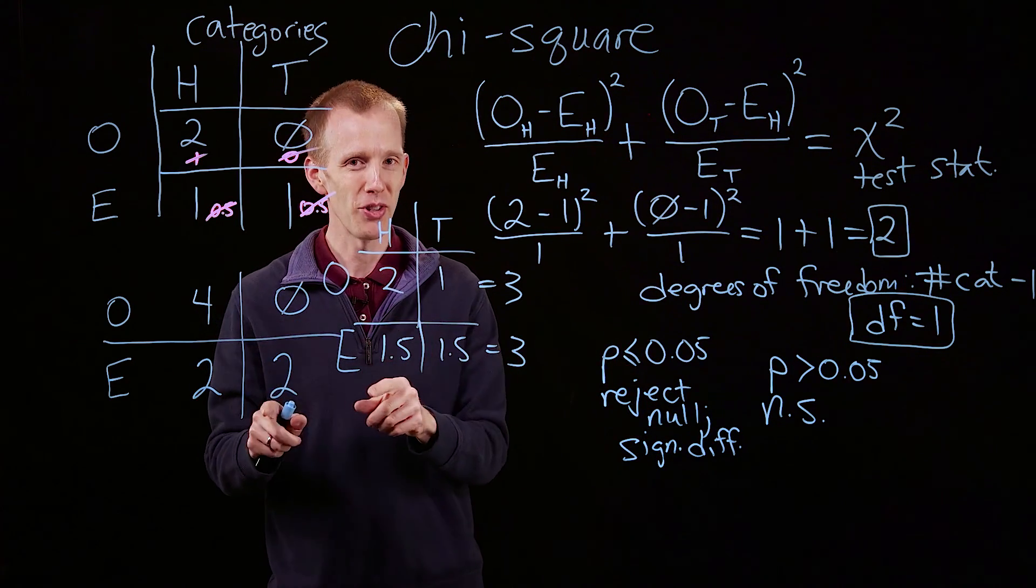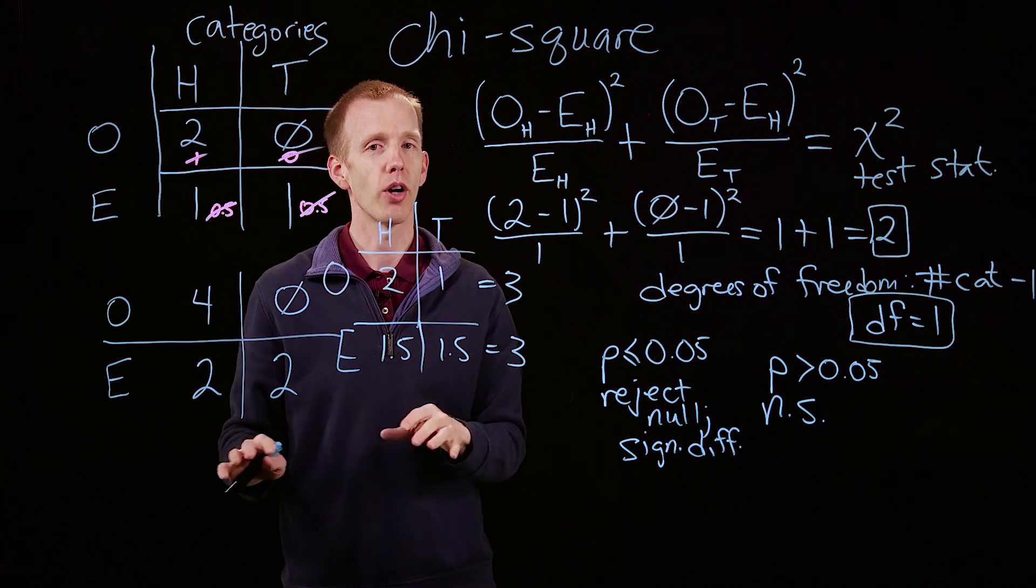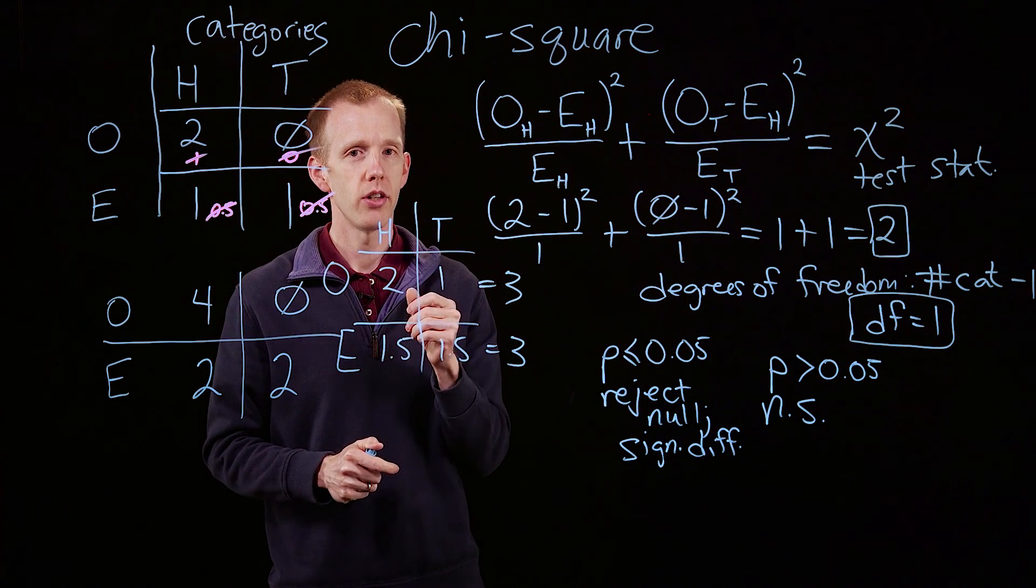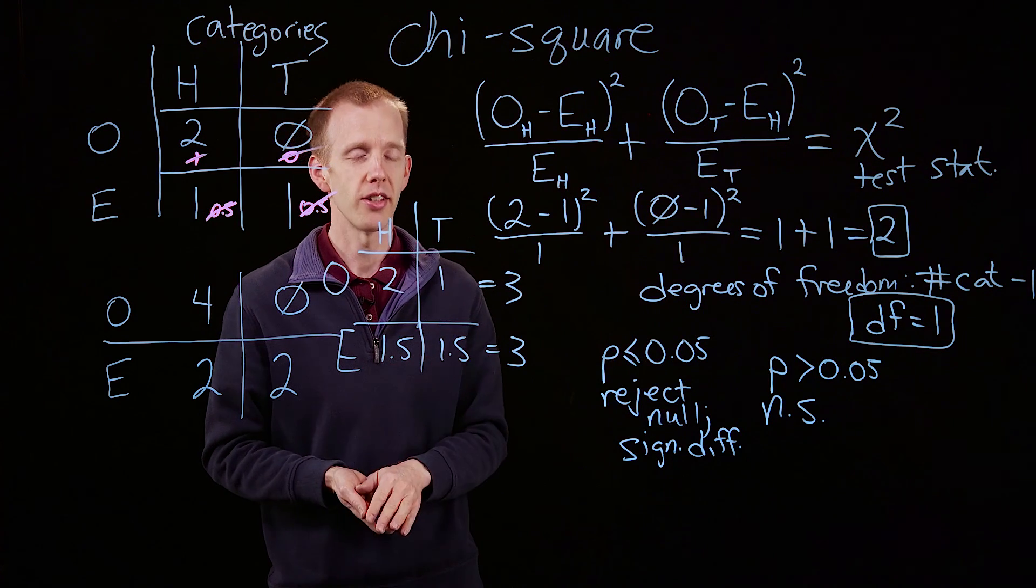We're going to have, based on Mendel's laws, expectations of how many recombinant gametes we should get.